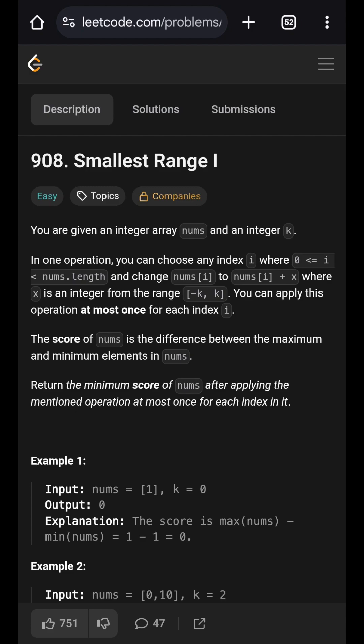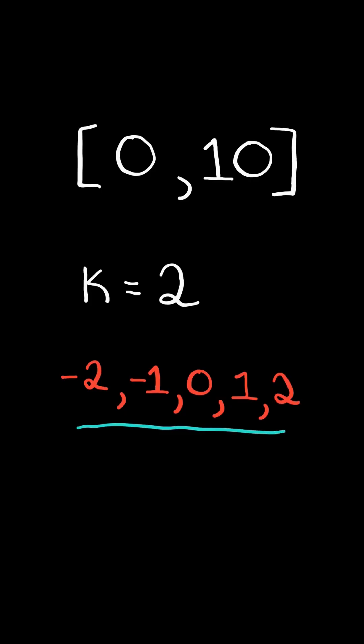Smallest range one. Consider the range of numbers from negative k to k. We must apply at most one operation to every number where we choose a number in the range and add it to a number in the list.